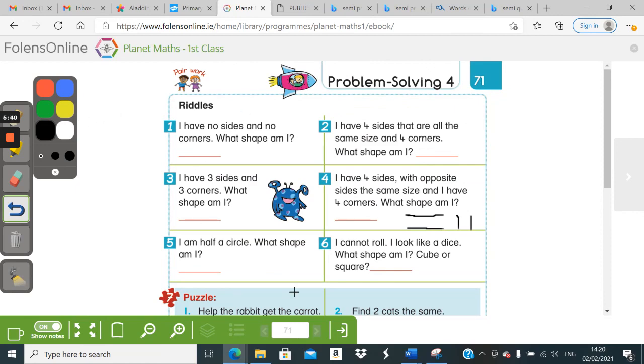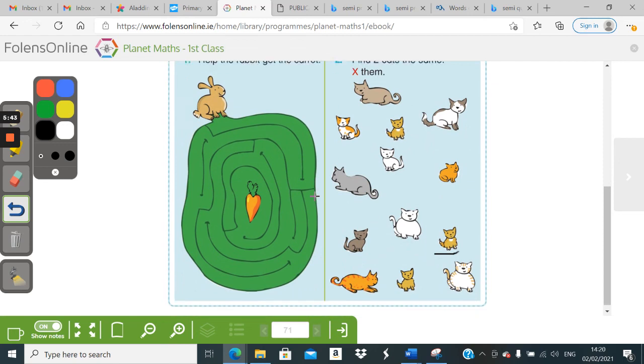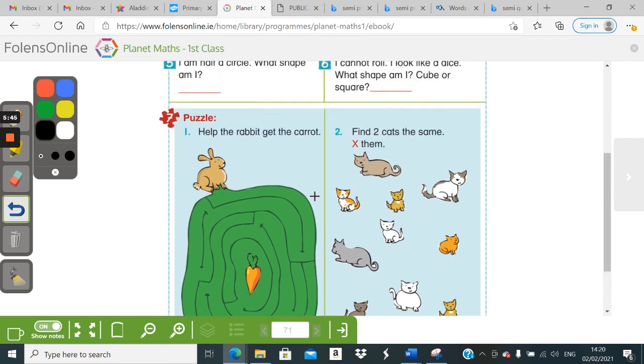Okay, good luck with your problem-solving. So, the first six answers are the names of shapes. Then you have a little map. Then you find the two cats that look the same. See you soon. Bye.